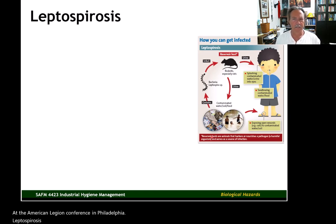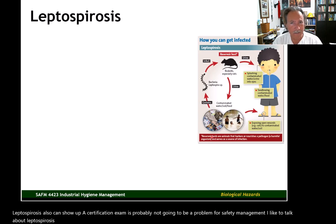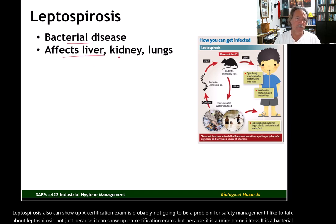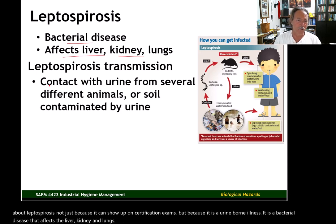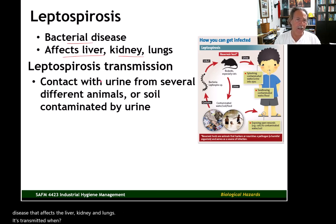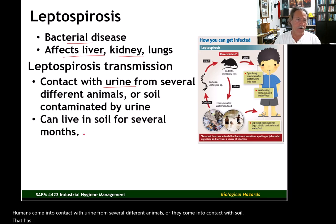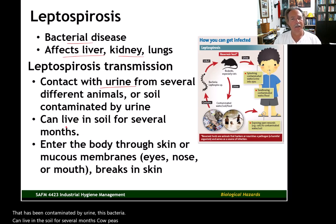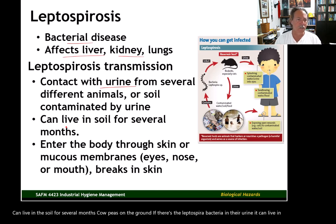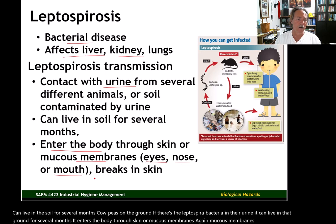Leptospirosis can also show up on certification exams and probably won't be a problem for safety management, but it's interesting to talk about because it is a urine-borne illness. It is a bacterial disease that affects the liver, kidneys, and lungs. It is transmitted when humans come into contact with urine from several different animals, or with soil that has been contaminated by urine. This bacteria can live in the soil for several months.